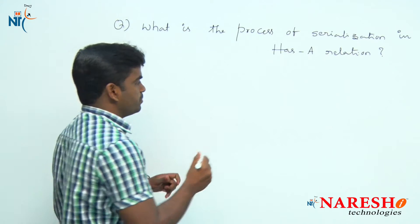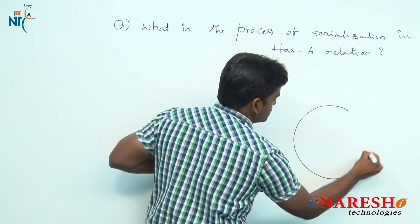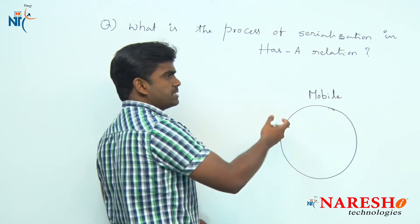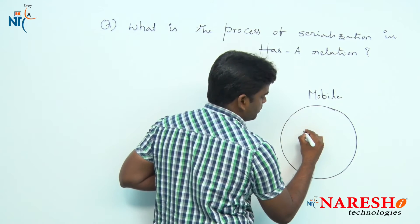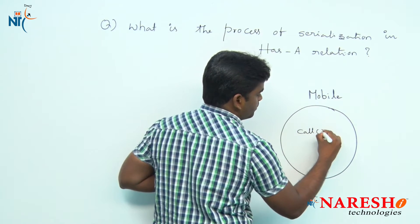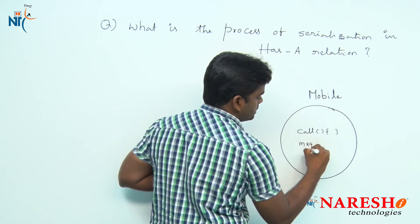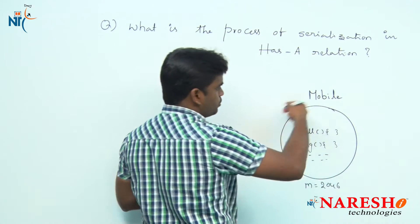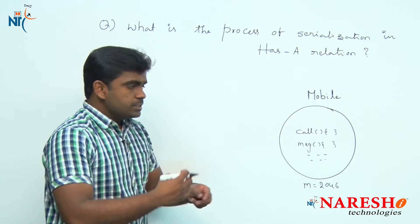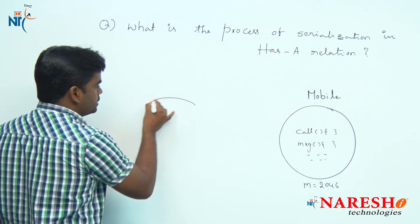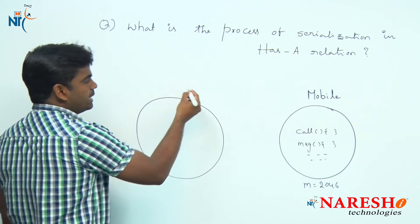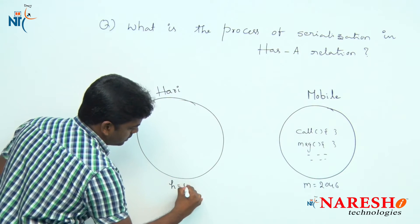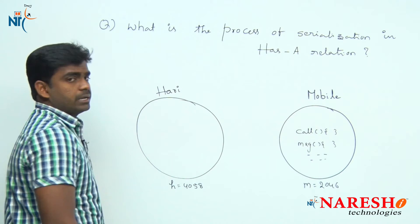For example, take one mobile object. This mobile object has properties like price, color, and functionalities such as calling, texting, and browsing. So there is a mobile object and one more object — a human object. For example, Harry is a name, and here it is having a reference variable whose address we are collecting into h.